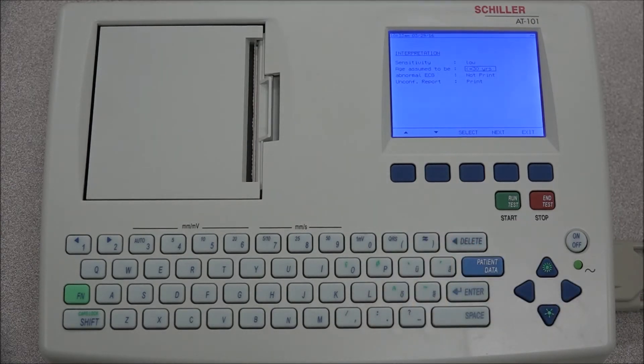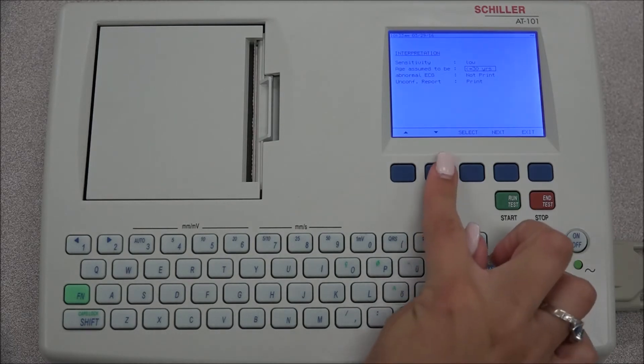The interpretation sensitivity can be set to high or low, which will suppress certain non-specific ECG diagnosis. Under age assumed to be, the patient's age range can be selected. This setting is only applicable when the patient data has not been entered. When a patient's date of birth has been entered, this setting is ignored.